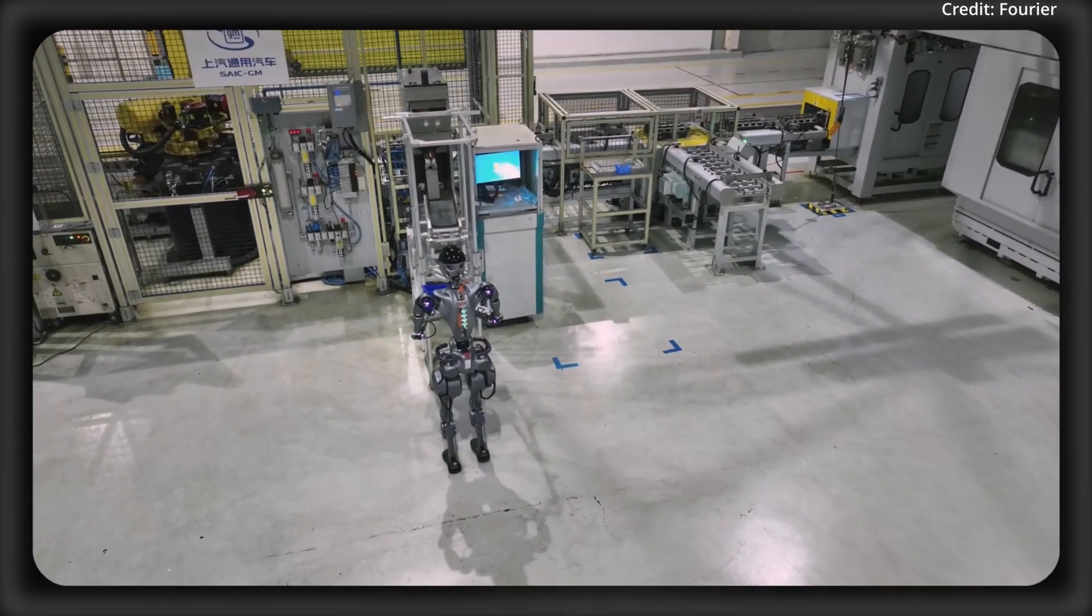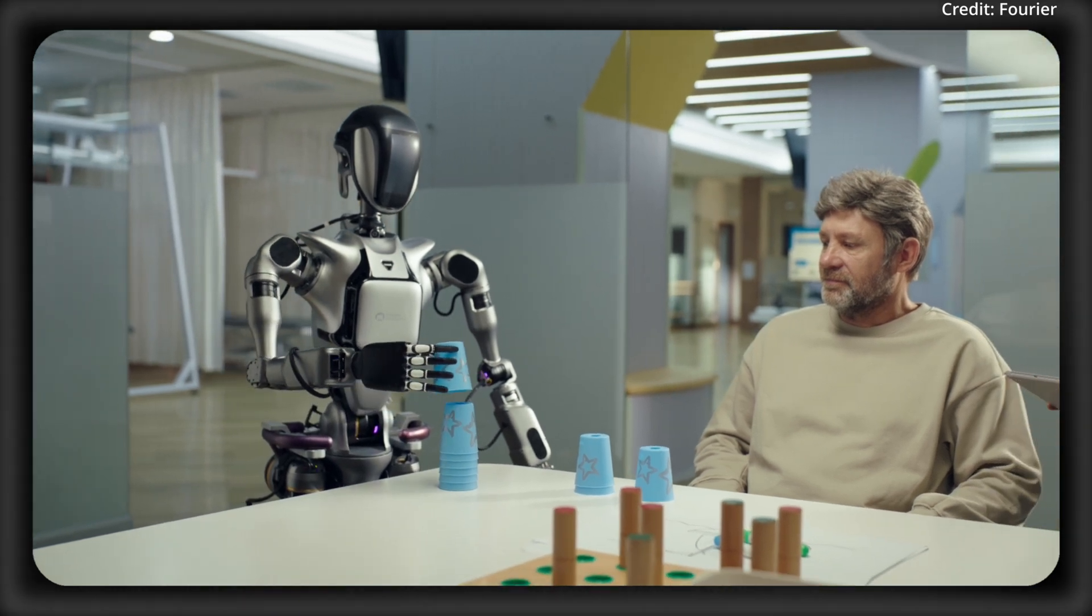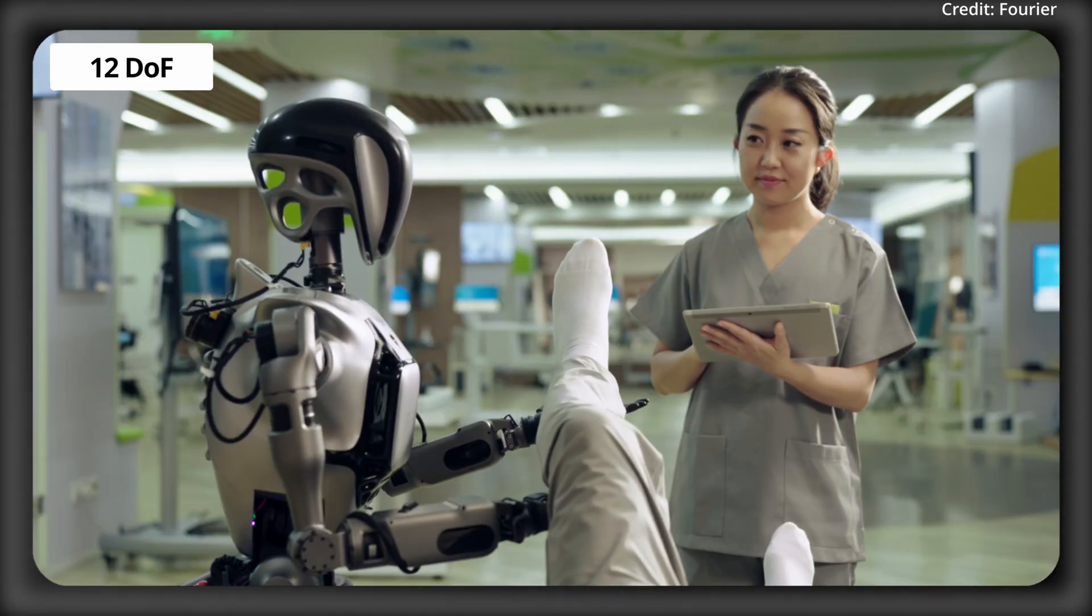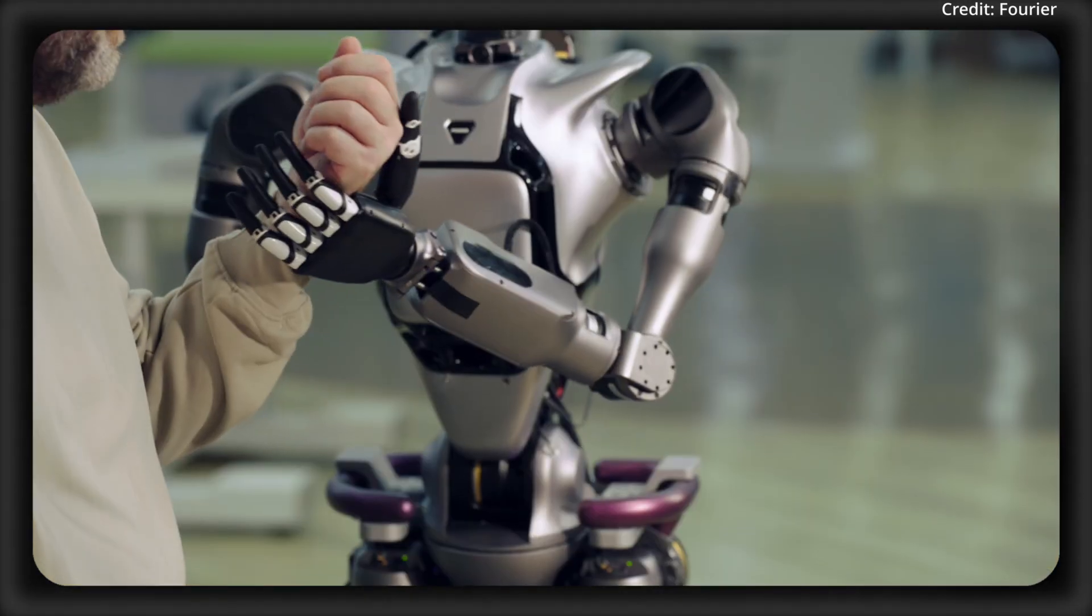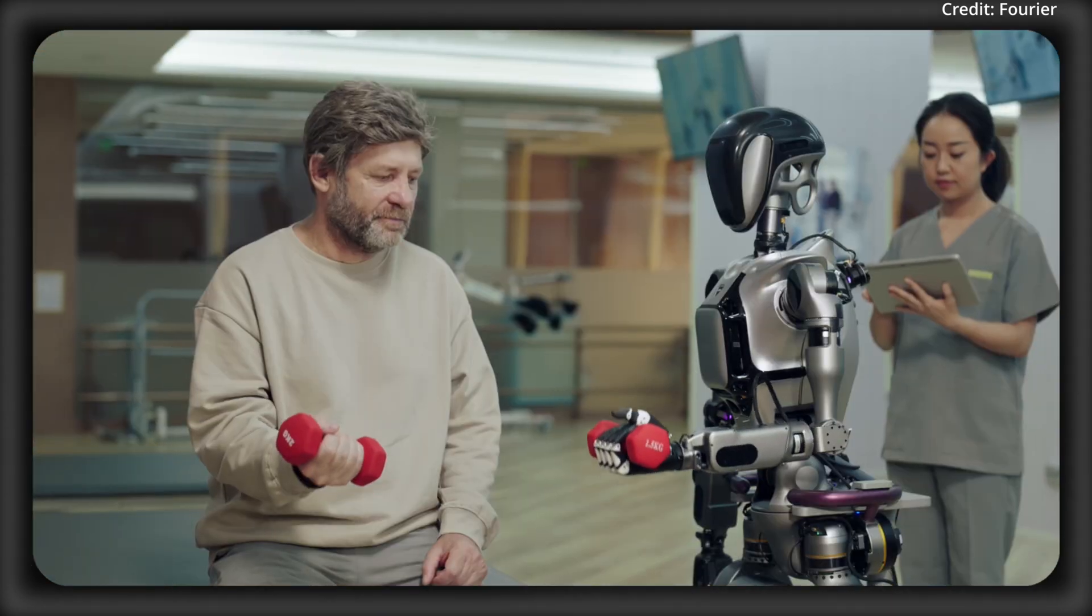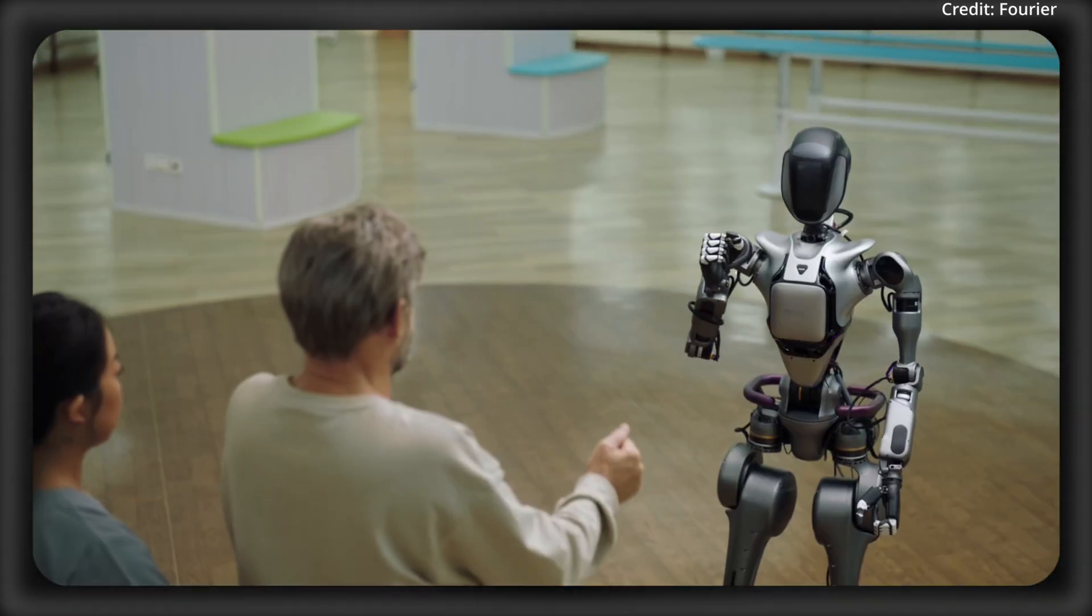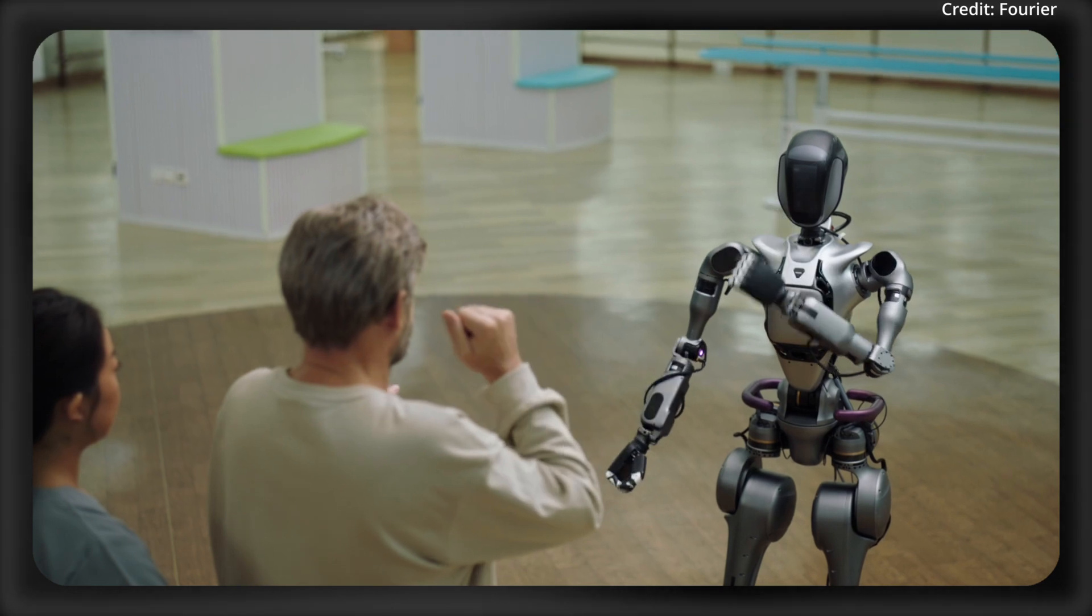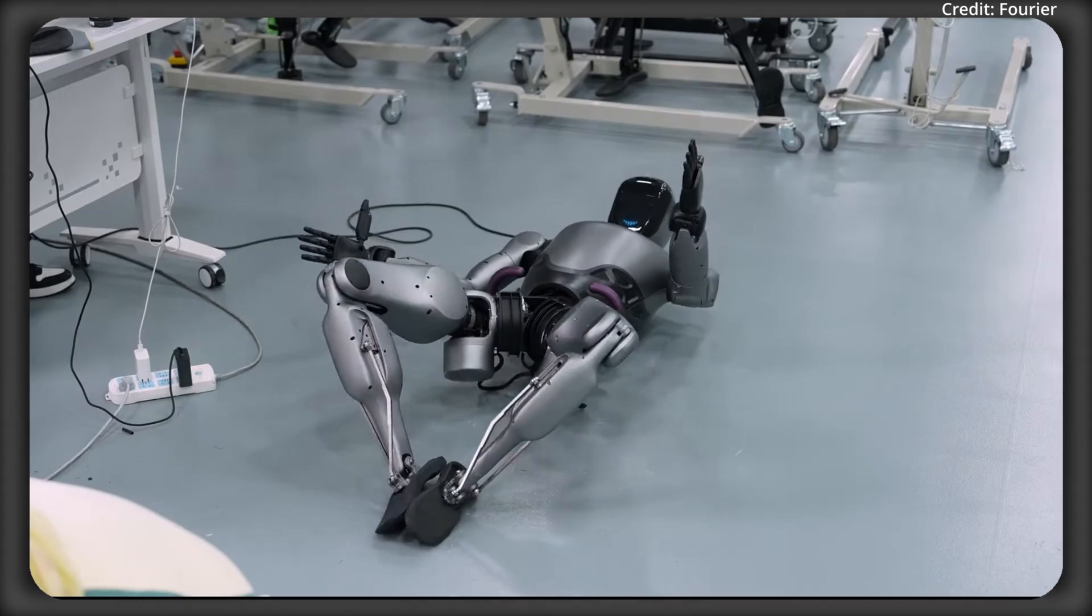But the GR2's standout feature is its highly dexterous hand, which is equipped with 12 degrees of freedom and 6-array-type tactile sensors, which provides the robot with an exceptional level of sensitivity to execute highly delicate assemblies or even medical procedures in healthcare settings. And this combined with teleoperation could be a game-changer for industries requiring fine motor skills, and to power it all,